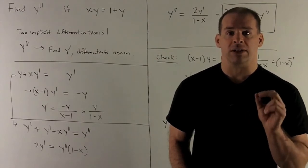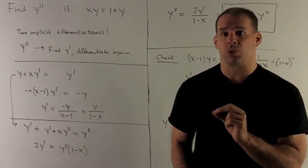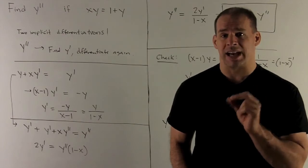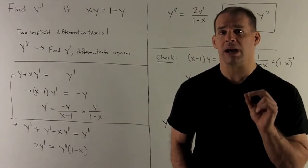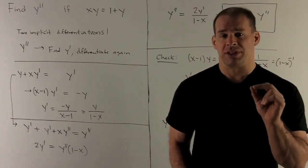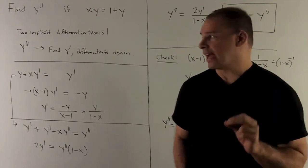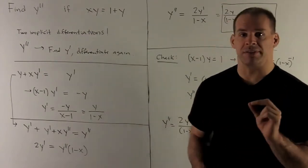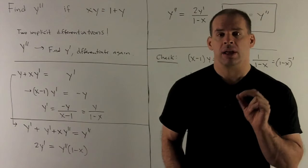Now to get y double prime, we could use the quotient rule on this, just take the derivative with respect to x again. But let's use the implicit differentiation to the equation I got when I took my first implicit differentiation. Then what's going to happen?